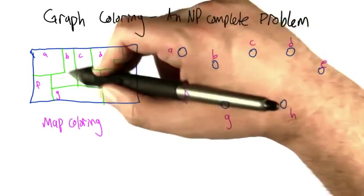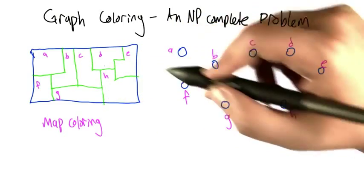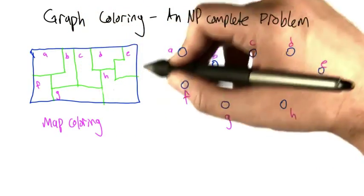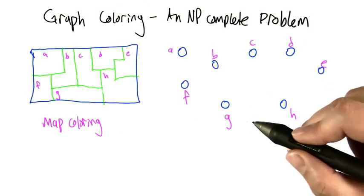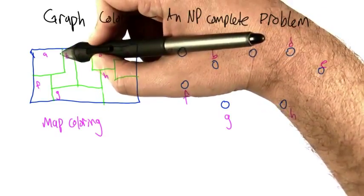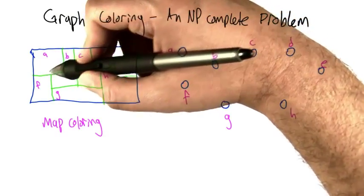We can actually think of this as a problem on graphs. In particular, we're going to make each region on the map correspond to a node in a graph, and we're going to connect two nodes of the graph if they share a border and therefore can't have the same color in the map.